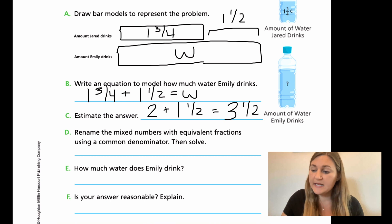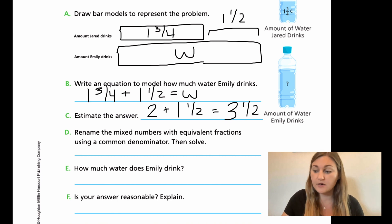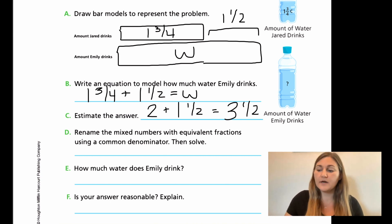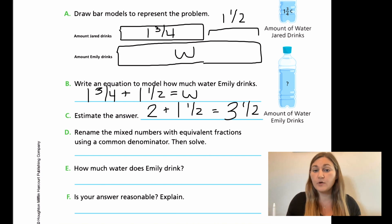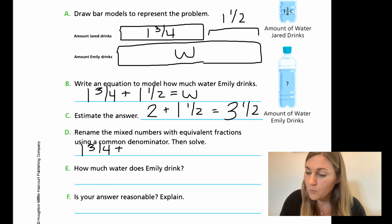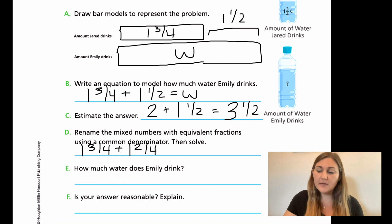For D, it says rename the mixed numbers with equivalent fractions using a common denominator, then solve. We need to make those common denominators first, and then we can solve for the answer. My one and three fourths and my one and a half — the common denominator is going to be four, since four and two can both multiply to reach that number. I'll leave my one and three fourths as is, and change one and a half to one and two fourths. Now I've made equivalent fractions using common denominators.